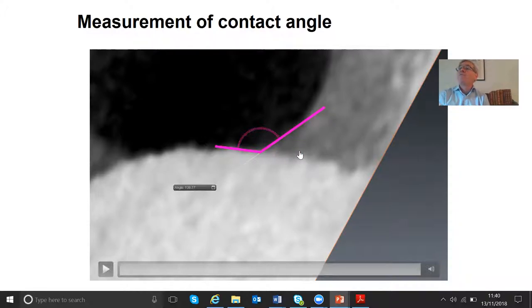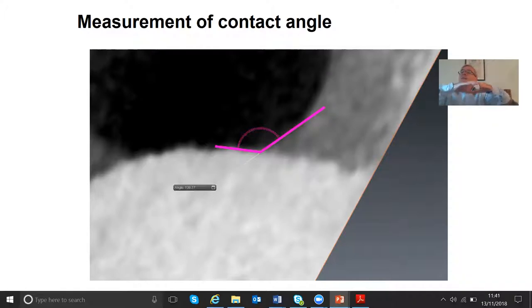The water is the wetting phase. It likes the surface. The carbon dioxide has less interaction with the solid. It's the non-wetting phase. It has a curvature that bulges out into the water. So from the Young-Laplace equation it's at a higher pressure. From the Young equation we have a contact angle that's less than 90 degrees.